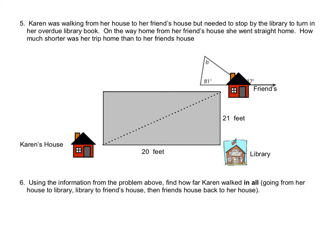Number five: Karen was walking from her house to her friend's house but needed to stop by the library to turn in her overdue library book. On the way home from her friend's house, she went straight home. How much shorter was her trip home? We need to find her direct trip, and the only theorem we can use is the Pythagorean theorem. We have A squared plus B squared equals C squared — we're looking for C, the hypotenuse.